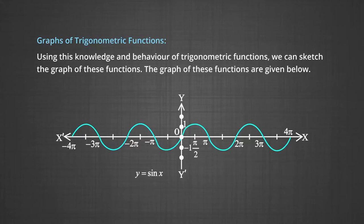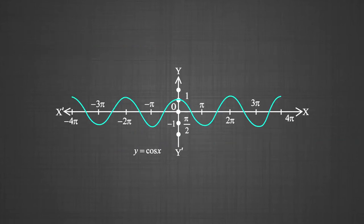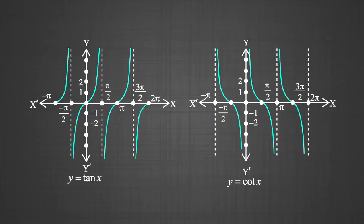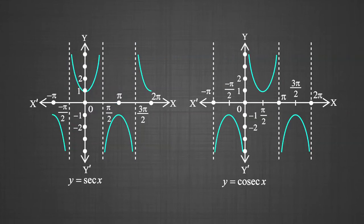The graphs of these functions are shown below. First, this is the graph of the sin function. Second is the graph of the cos function. Then the graph of y = tan x and the graph of y = cot x. This also shows the graph of the sec function and the graph of the cosec function.